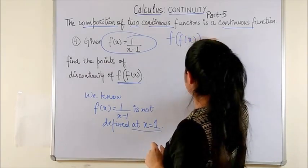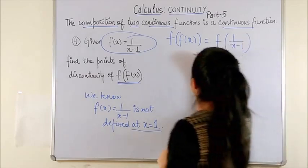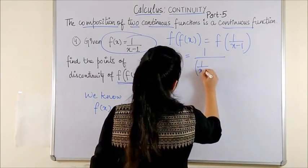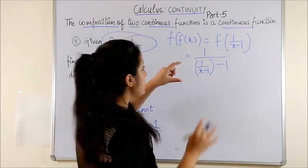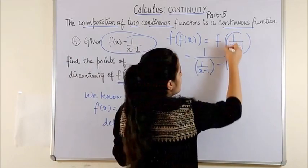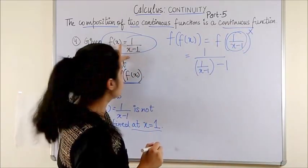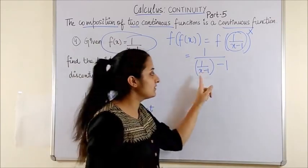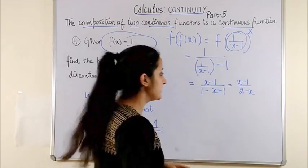f of f of x, this means f of 1 upon x minus 1 which gives us 1 upon x minus 1. On simplifying this, please note here this one acts as your x. So, when we substitute it here, f of capital x will give us 1 upon capital x minus 1 which is this. I am taking the LCM, this is the function which we end up getting.